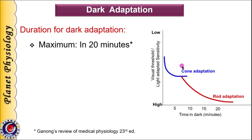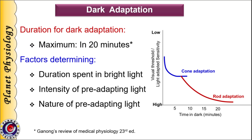As seen in the dark adaptation curve, visual sensitivity increases almost to maximum in 20 minutes, although further increase continues over time. This duration of dark adaptation depends on three factors. First, duration spent in bright light before being exposed to darkness — more time in bright light means greater time required for dark adaptation. Second, intensity of pre-adapting light — very bright light increases cone adaptation time and delays the switchover to rod adaptation. Third, nature of pre-adapting light — exposure to higher wavelengths like red light drastically reduces dark adaptation time.